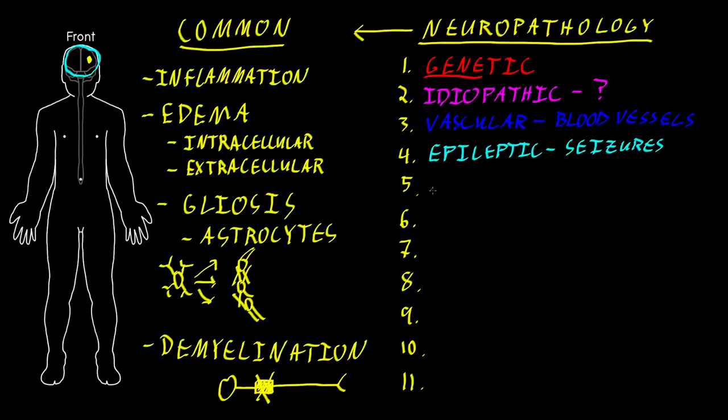The next category I call mechanical neurological disorders, which I further divide into two categories. One is trauma. This involves tissue injury from a sudden physical force, like a sudden severe blow to the head causing traumatic brain injury.